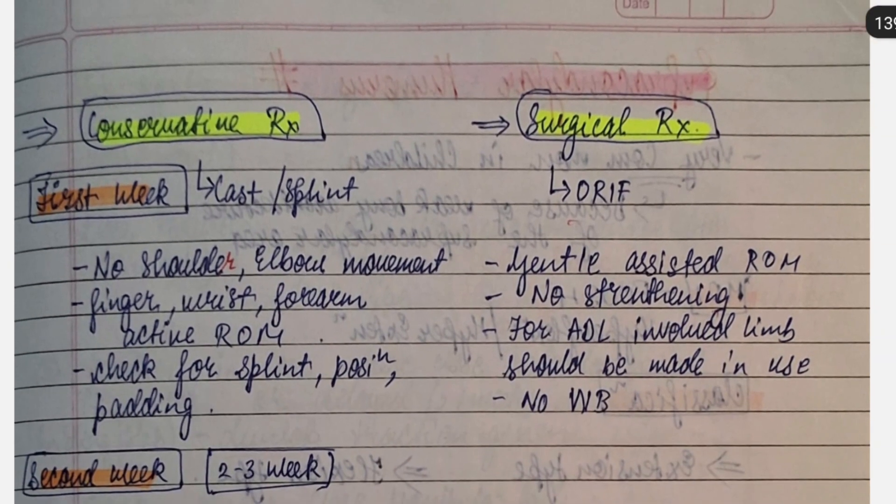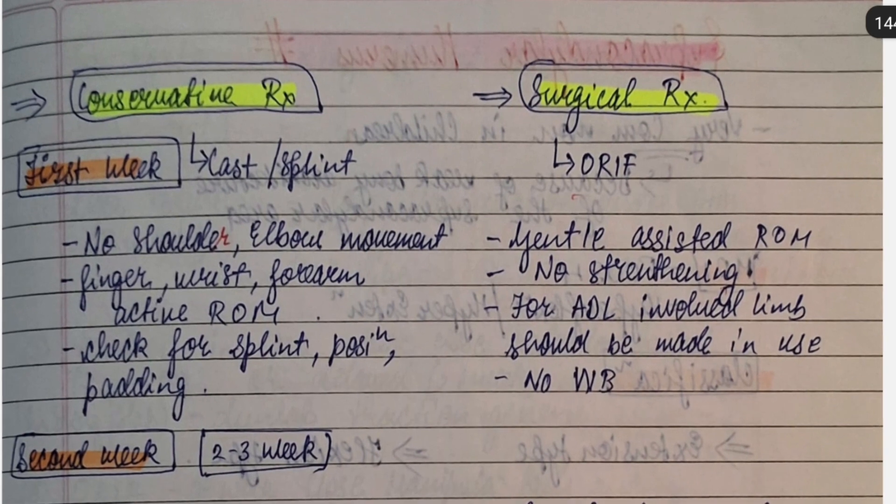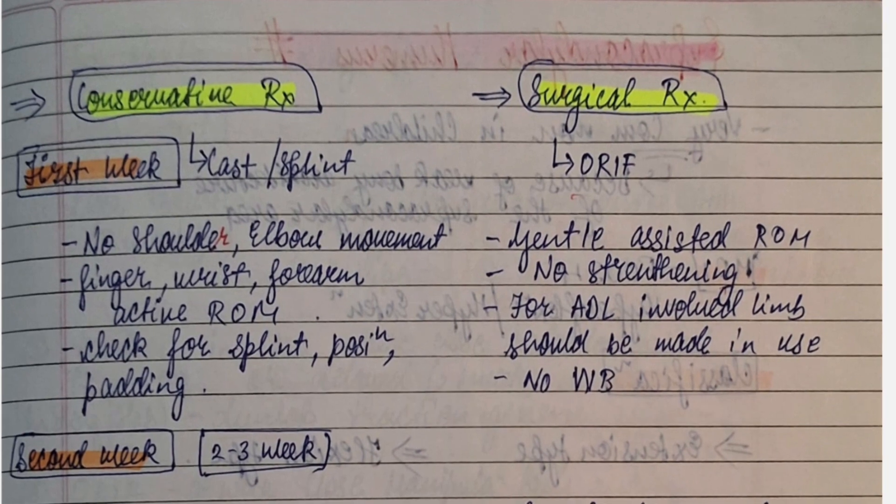Looking at conservative management and surgical management from the physiotherapy point of view. First, for conservative in first week: cast or splint is there, no shoulder-elbow movement should be there. Finger, wrist, forearm active range of motion. Check for splint position and padding.